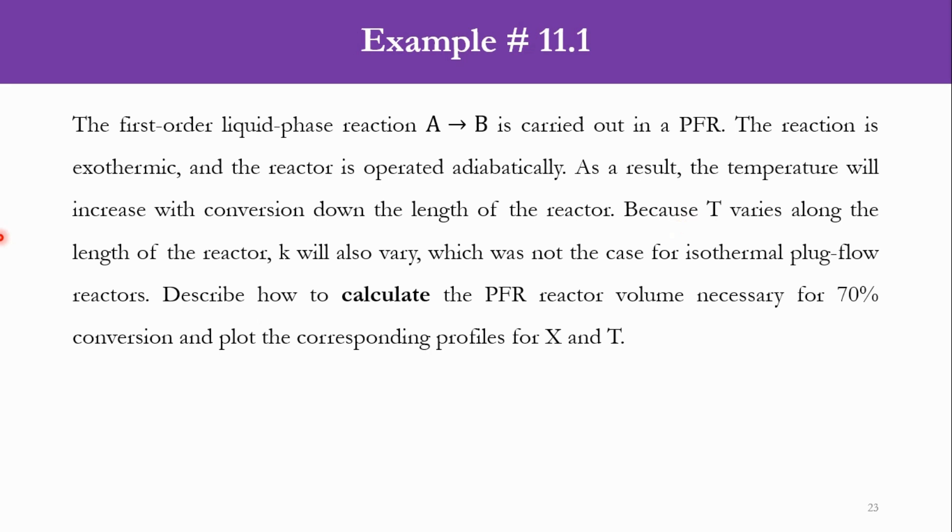Because T varies along the length of the reactor, the rate constant k will also vary. Initially we assumed an isothermal system with constant temperature, so we took one constant value of k. However, in a non-isothermal reactor, k will vary at each point, which was not the case for isothermal plug flow reactors.